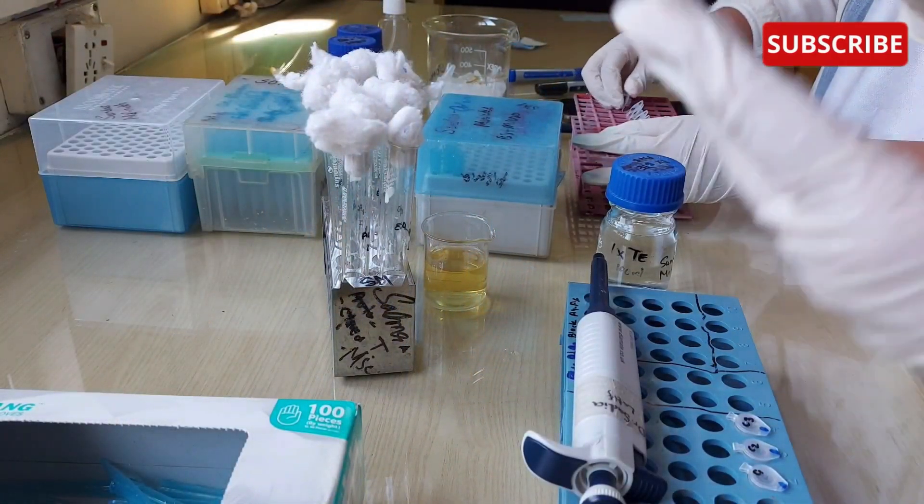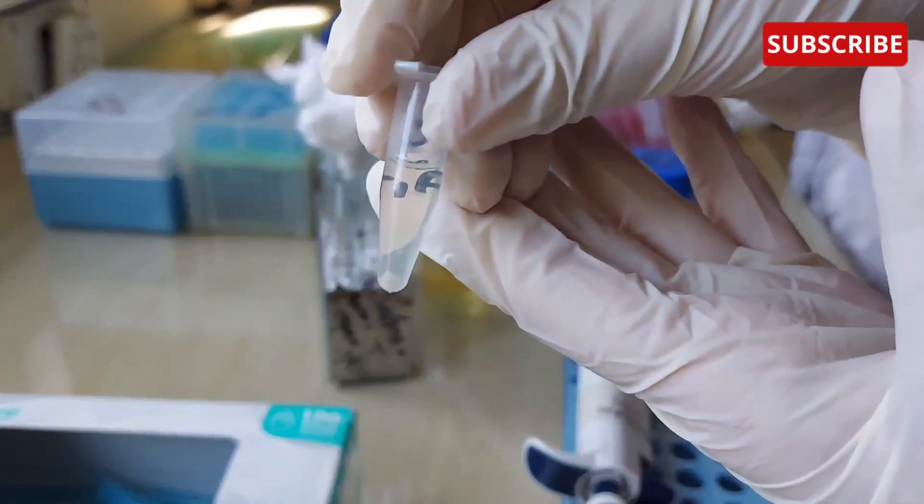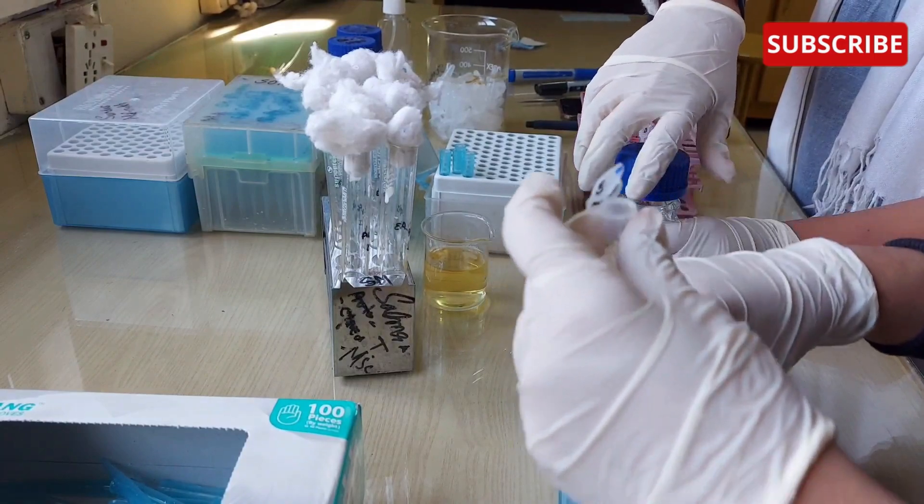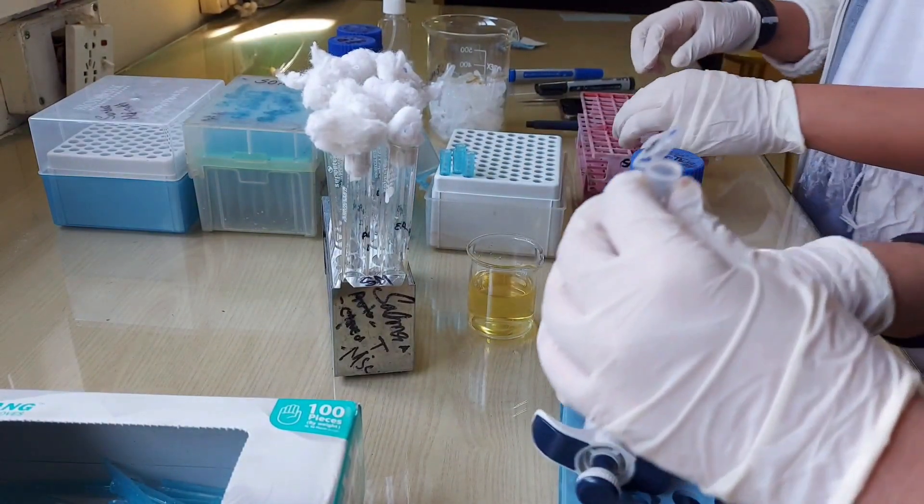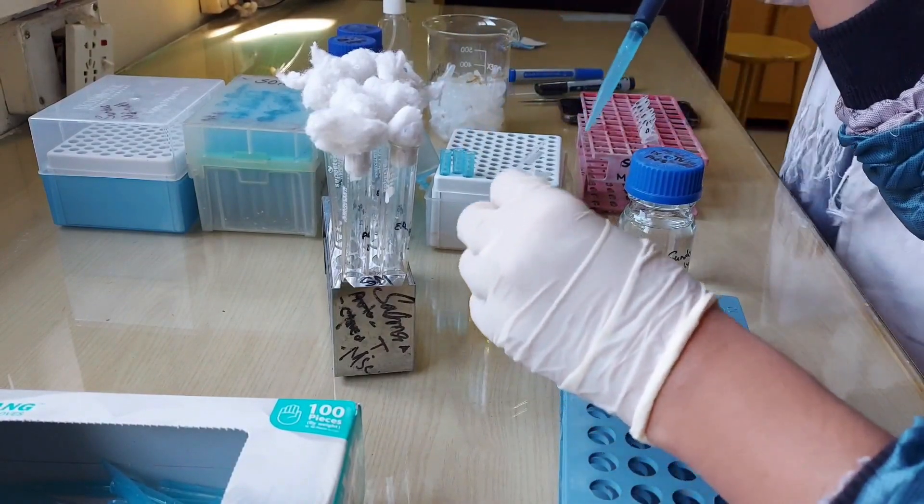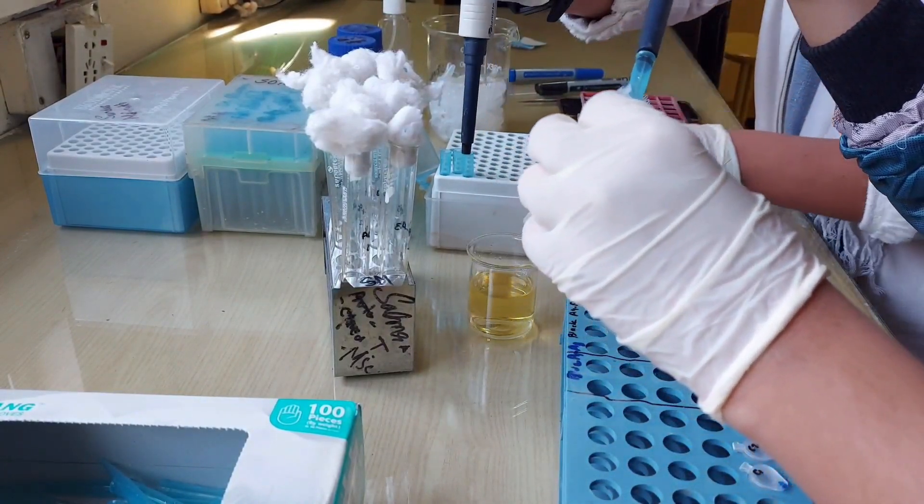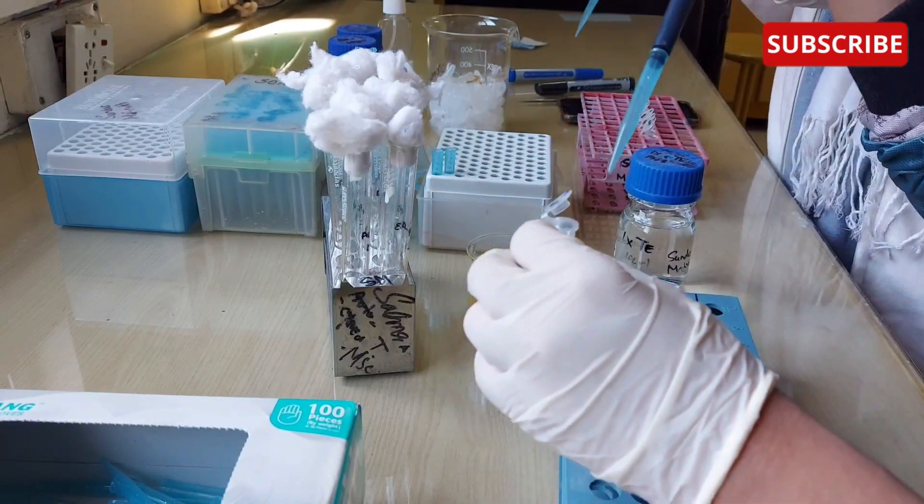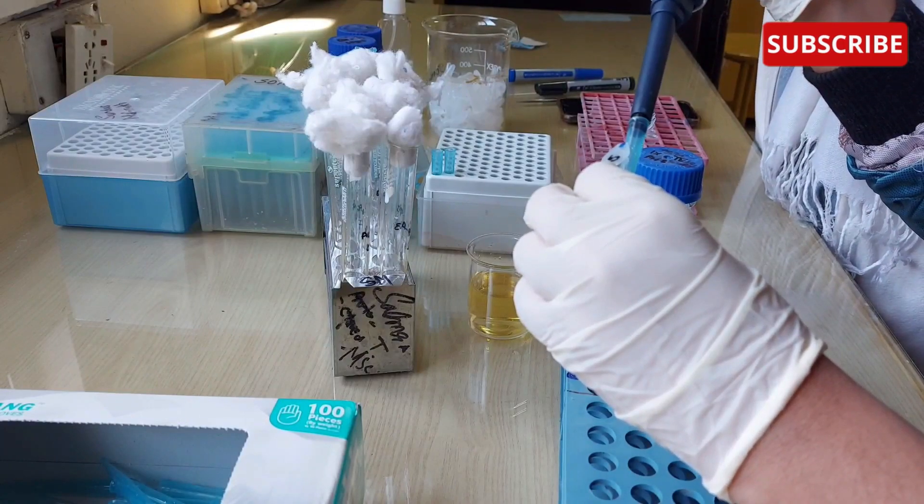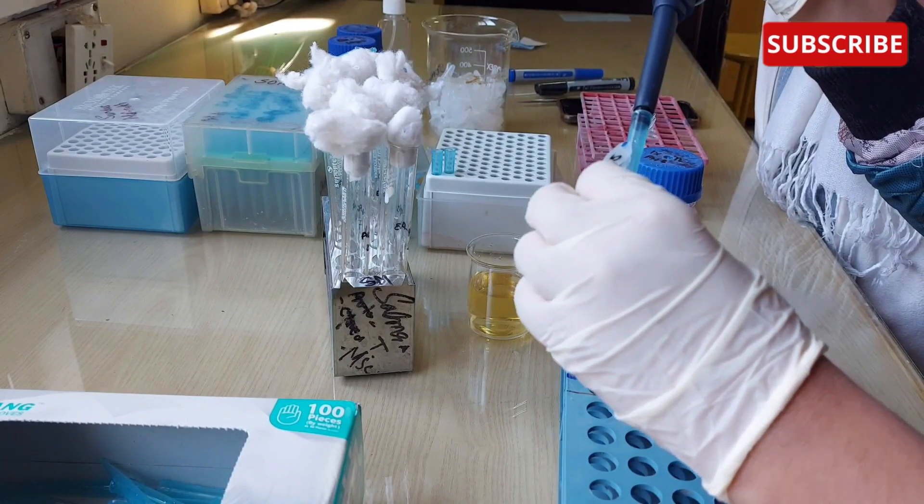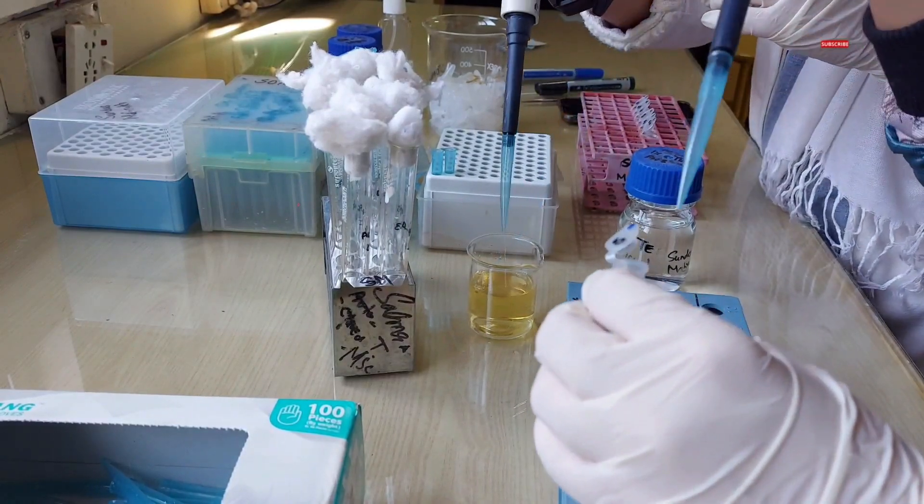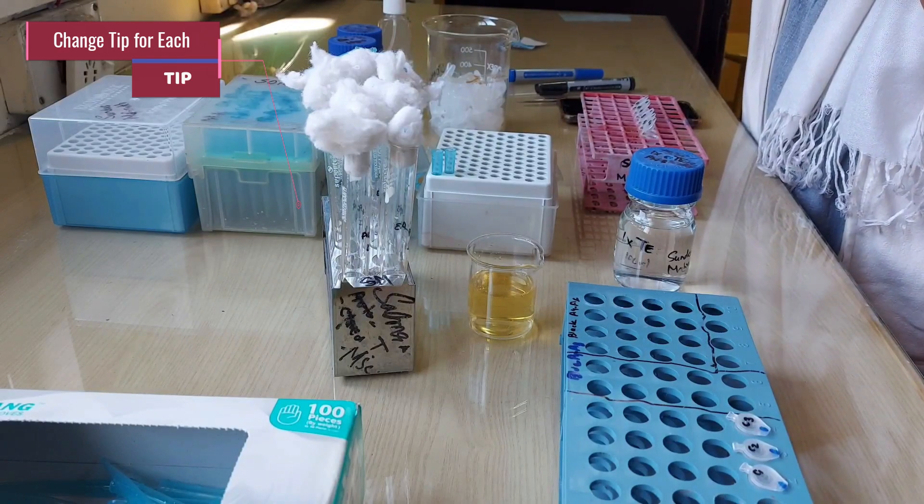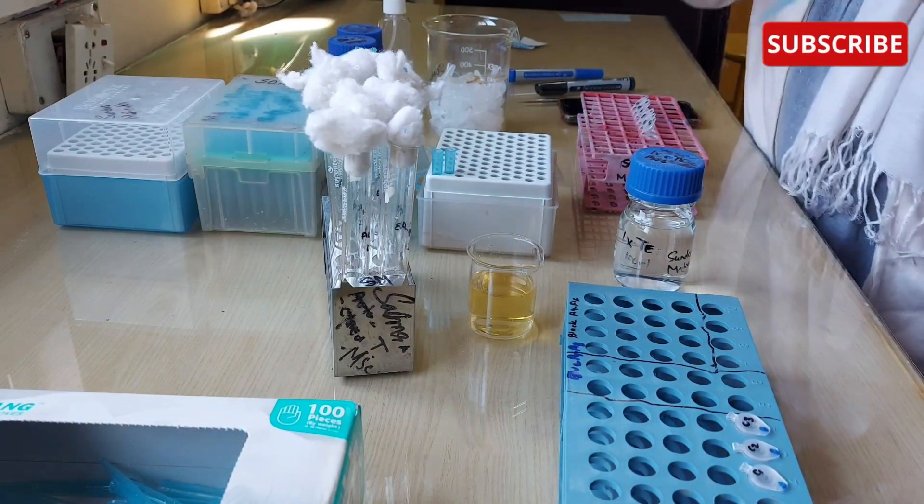After completing all this procedure and having a compact cell pellet at the end of the eppendorfs, now I will use 1X TE buffer. This step is called resuspension. But before resuspending the pellets into the TE buffer, I will remove the remaining supernatant off of the pellets. Carefully with the help of the micropipette, I will discard off the supernatant off of the pellet. Remember, always change the blue tip with each eppendorf. Do not pipette out the supernatant with the same blue tip.